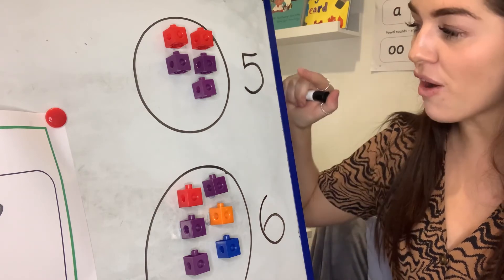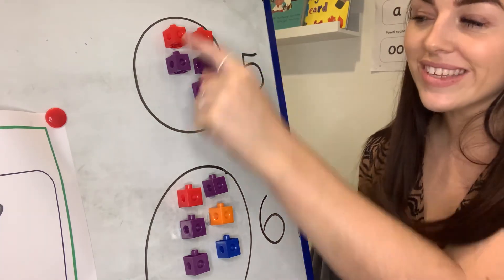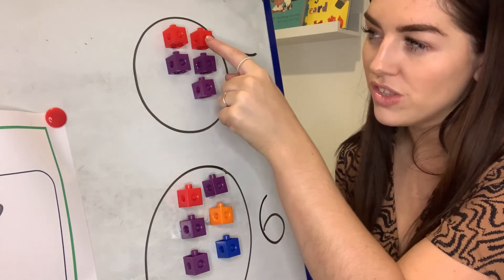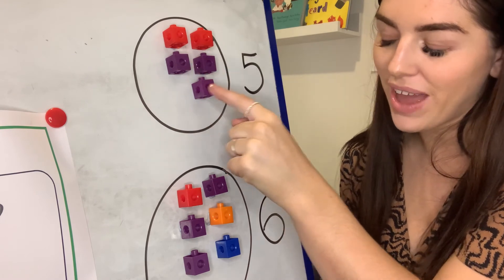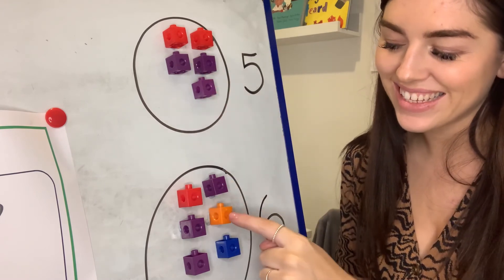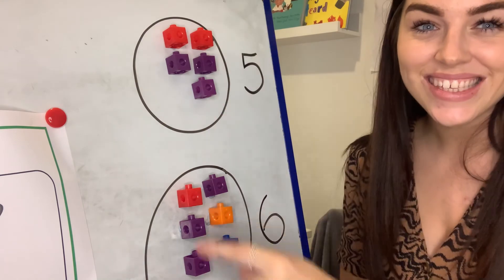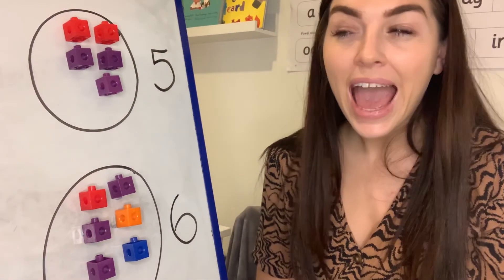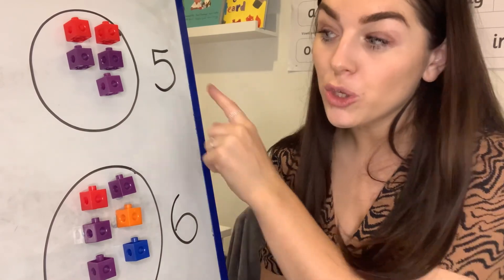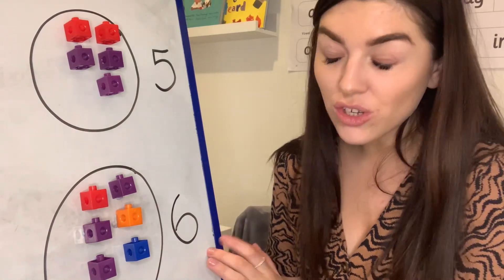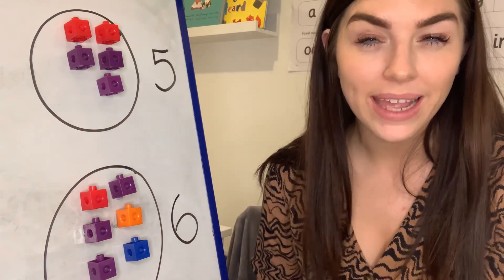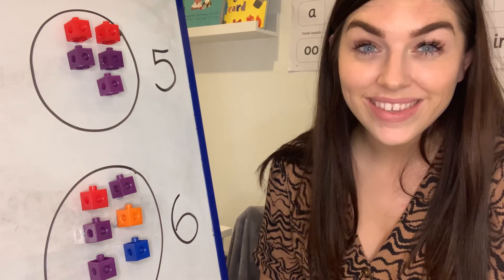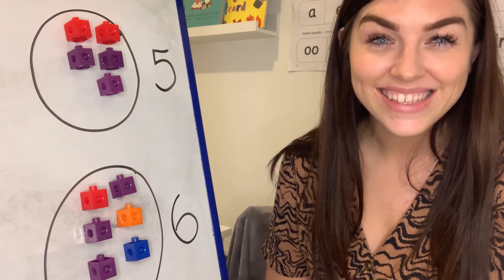The parts are five and six. All together I should have 11. Shall we count and check? 1, 2, 3, 4, 5, 6, 7, 8, 9, 10, 11. All together we have 11. Boys and girls, your challenge today is to see how many different ways you can partition 11. Can you find another way that's different to my way? Can you find more than one way to do it? I can't wait to see your work later. Take care, boys and girls.